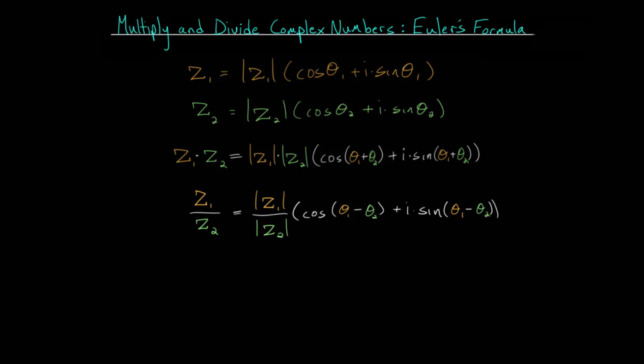In this video, I'd like to talk about multiplying and dividing complex numbers using Euler's formula. In previous videos, we looked at multiplying and dividing complex numbers when they're written in polar form, where the polar form of a complex number has the magnitude or the length of the complex number — its distance from the origin — multiplied by its direction, where this angle theta is measured relative to the positive real number axis.